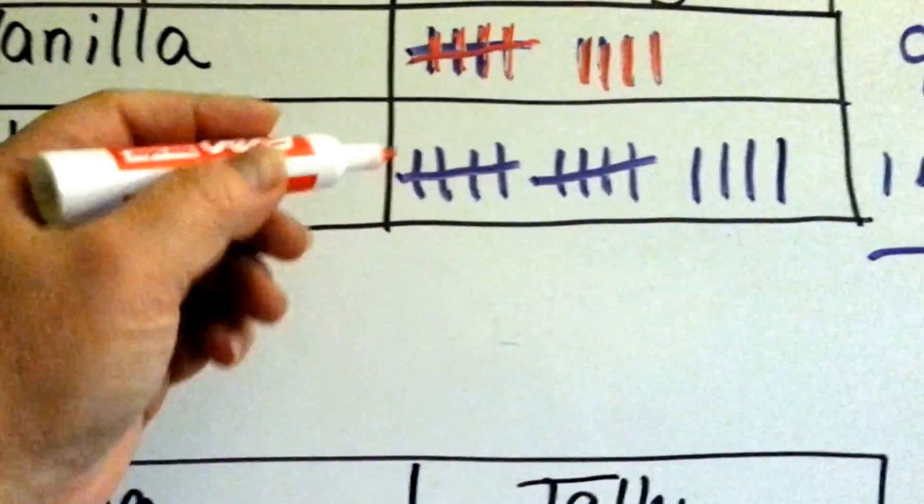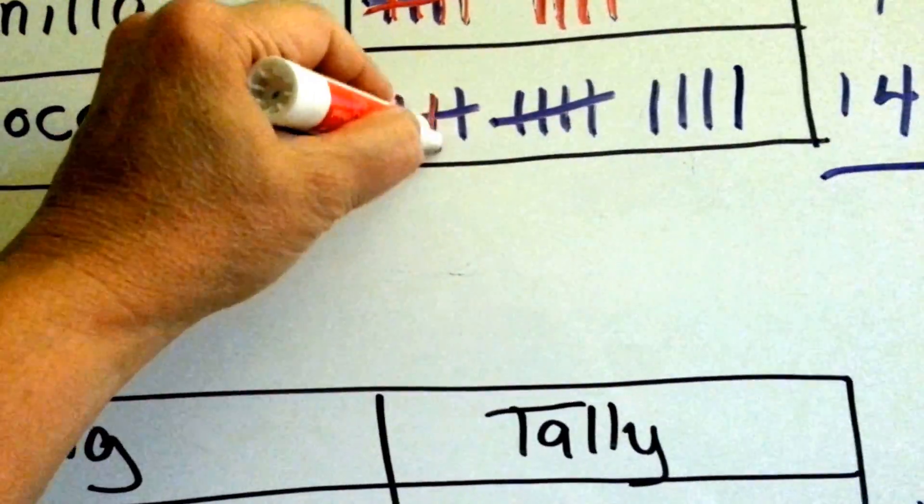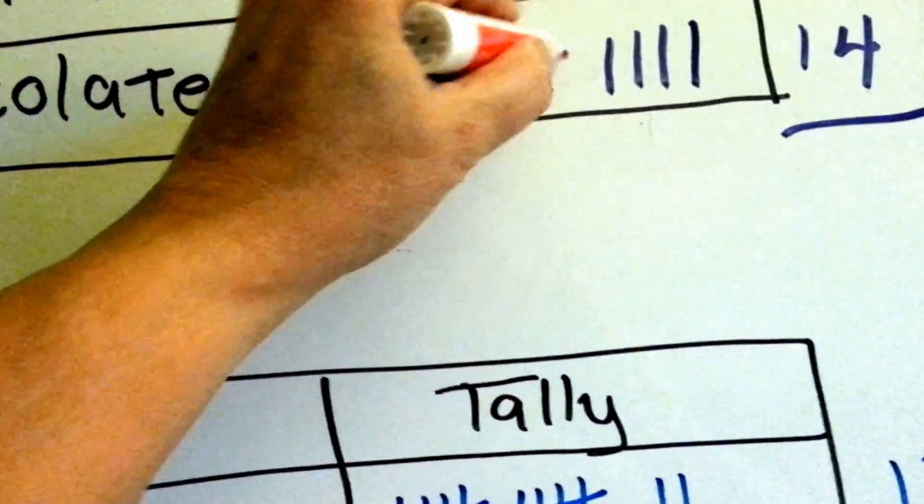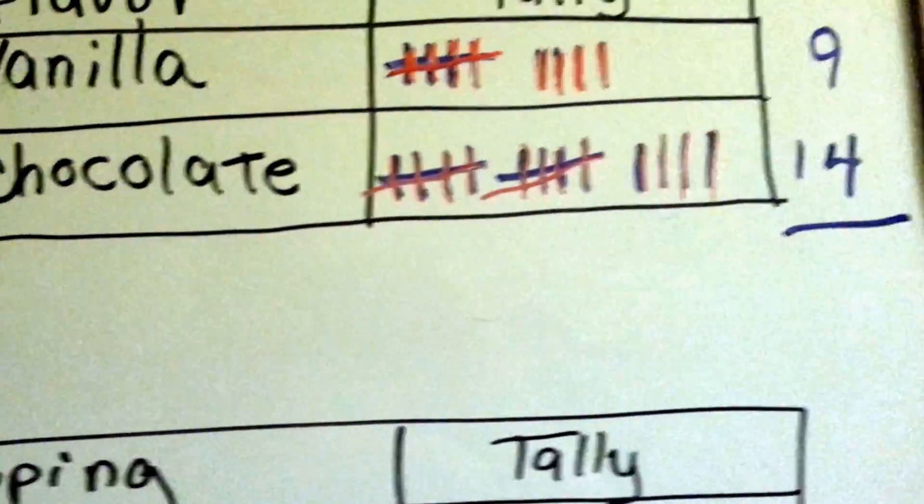When she counted chocolate, she counted all the hands that were raised and she counted 1, 2, 3, 4, 5, 6, 7, 8, 9, 10, 11, 12, 13, 14. 14 kids wanted chocolate.